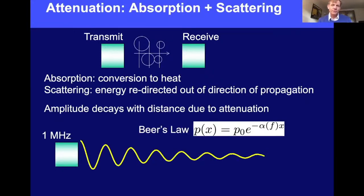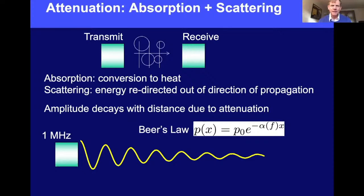Together, absorption and scattering are normally added into what's referred to as attenuation. As we take a receiver and move it away from a source, the amplitude decays exponentially — this is often referred to as Beer's Law or the Beer-Lambert Law in optics, and is common for many wave processes. Here p0 is the pressure at the transmitter, and the pressure at some distance x decays exponentially.